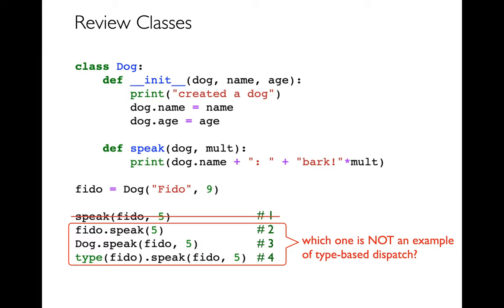And so I can see the one that does not have type-based dispatch is number three, dog.speak. Even if Fido is a cat, I'm going to be calling the dog version of the method in example three, right? So that's not type-based dispatch. And that's going to get us into trouble if I say I have a list of objects that are of maybe different animal types.